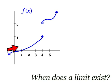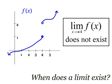However, if you travel towards 4 from the left, you arrive at a height of 1. This means that no limit exists for f at x equals 4.